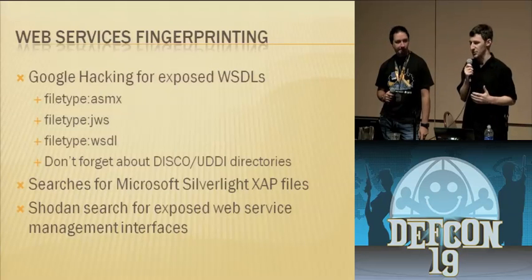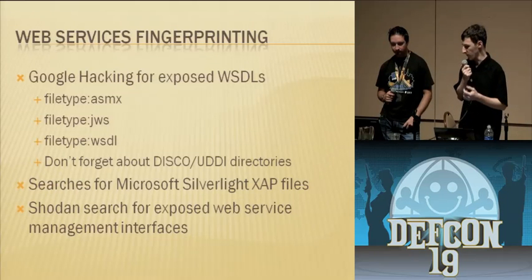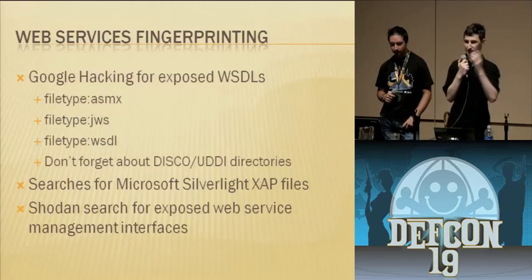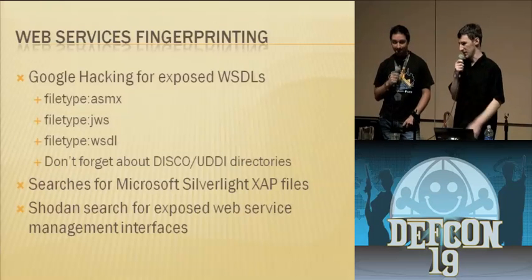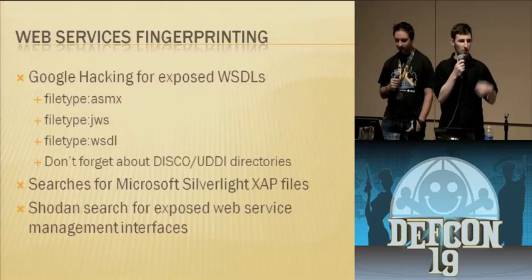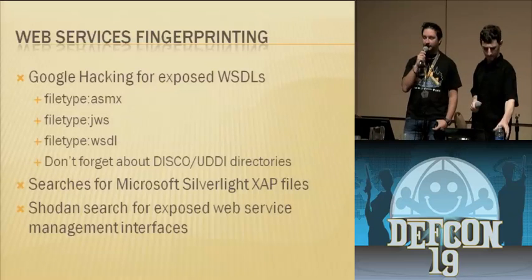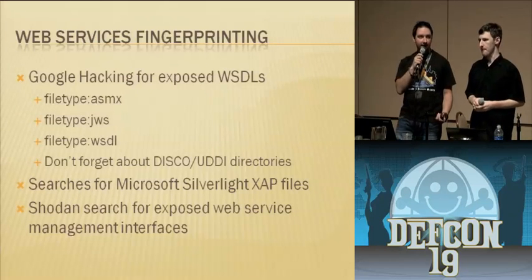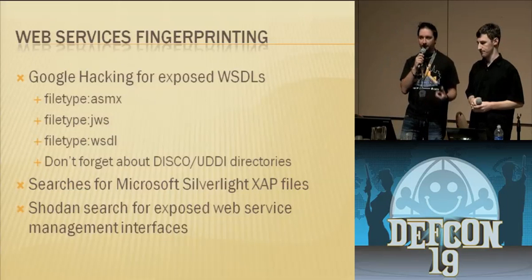When doing fingerprinting, we're trying to enumerate where those web services are on the internet. ASMX for Microsoft technologies, and there are tons of others. The WSDL is what you would specify — sort of like the data definition for communicating with a SOAP web service, defining all the methods and types of values passed to the service. You can also use Shodan and Google for this enumeration. Shodan is awesome — it makes reconnaissance really easy, especially for web application or web service reconnaissance. Also, Microsoft Silverlight XAP files, if you search for those in Google, are usually tied to web services, so you can look at the client-side app and see where services are exposed.